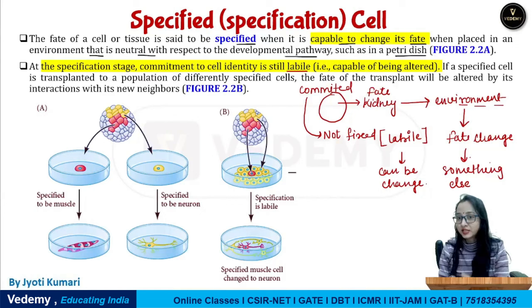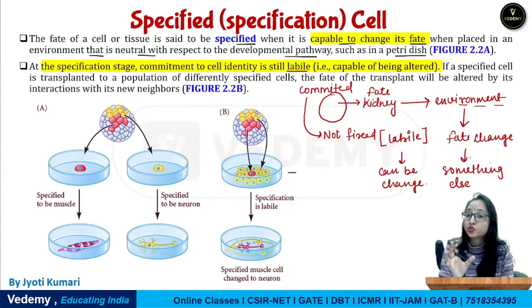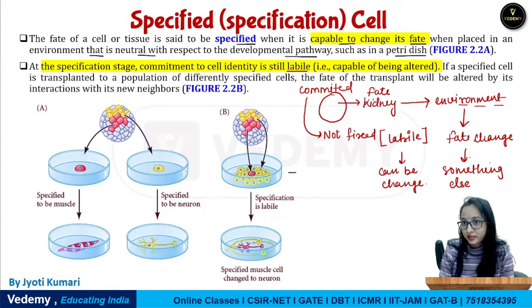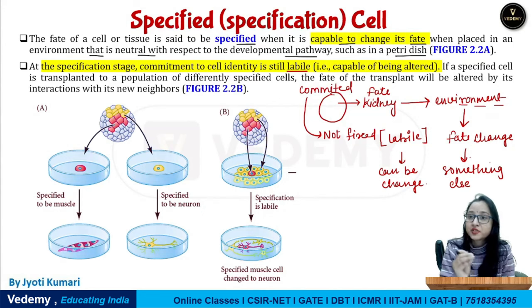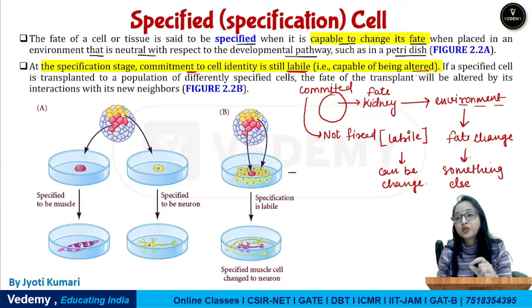Cells have the capability that even after deciding their fate, they can change their fate. That means up to this stage, cells have not become highly restricted. Therefore they can reverse their commitment — they can move away from their commitment. We say that cells in the specification stage are labile for their commitment, meaning they are capable of being altered and can change their fate.